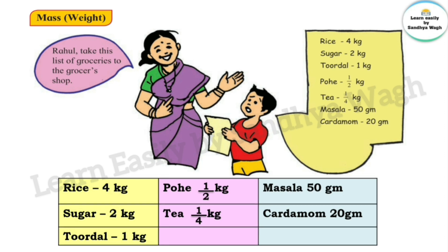Kilogram is written in short as kg and gram is written in short as gm. Gram is a unit for measuring weights much smaller than a kilogram. We buy items such as sugar, pulses, and rice in kilograms.